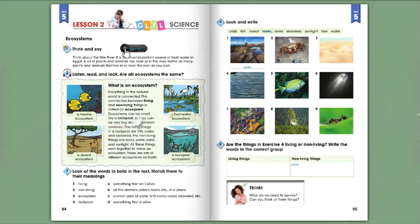What is an ecosystem? Everything in the natural world is connected. This connection between living and non-living things is called an ecosystem. Ecosystems can be small, like a rock pool, or they can be very big, like the Amazon rainforest. The living things in a rock pool are fish, crabs, and seaweed. The non-living things are rocks, water, sand, and sunlight. All these things work together to make an ecosystem.